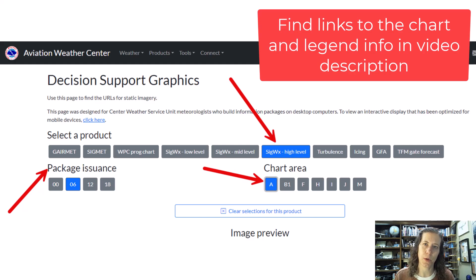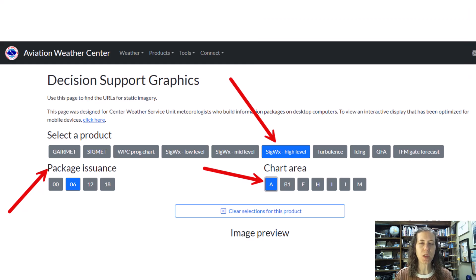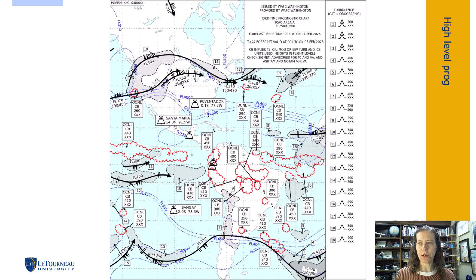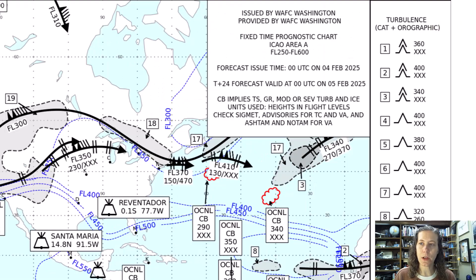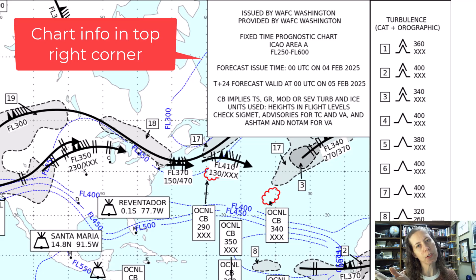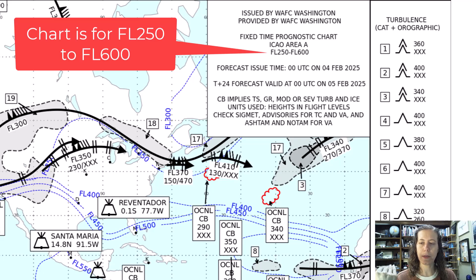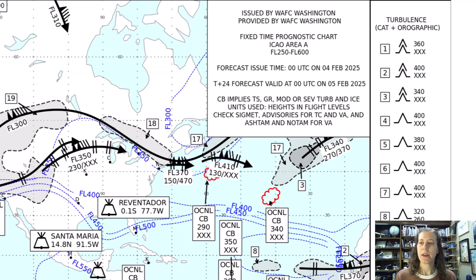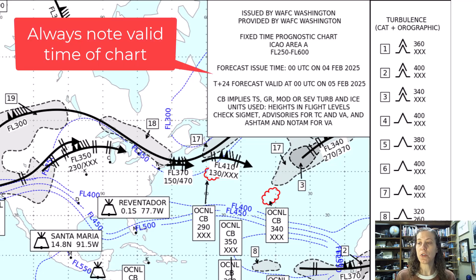Area A covers North America and South America. This is the overview of what you'll see. First of all, we always want to note the legend and the issue time of the forecast — this is a forecast product. You can see it covers flight level 250 to flight level 600, so anything below that is below FL250. It was issued at approximately 00 UTC on the 4th of February, with a 24-hour forecast valid at 00 UTC on the 5th of February.